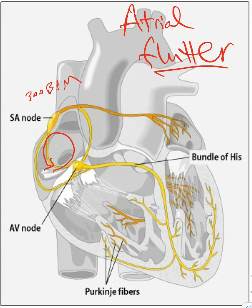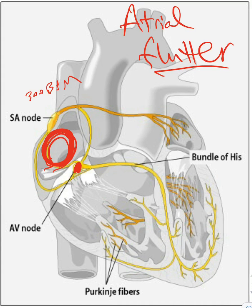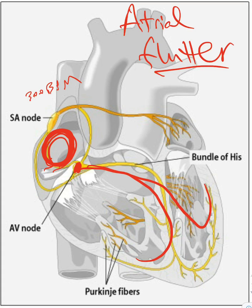The speed of the circuit in the atrium is 300 beats per minute, but unfortunately the AV node cannot take that — it's too fast for it. So what's going to happen is there will be a couple of circuits, and then when the AV node is ready it's going to pass the electricity, and according to the AV node you're going to see whether there's a QRS or not.